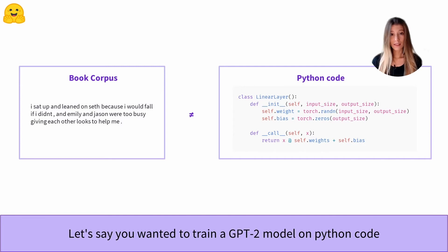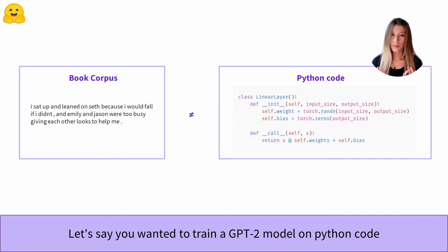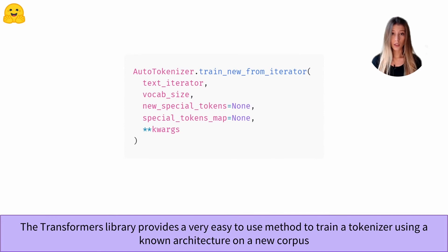Let's take an example. Let's say you want to train a GPT-2 model on Python code. Even if Python code is usually in English, this type of text is very specific and there is no tokenizer already trained on it. To show this, we will see the difference produced on an example. We are going to use the method train_new_from_iterator, which all fast tokenizers in the library have — in particular, the GPT-2 fast tokenizer.